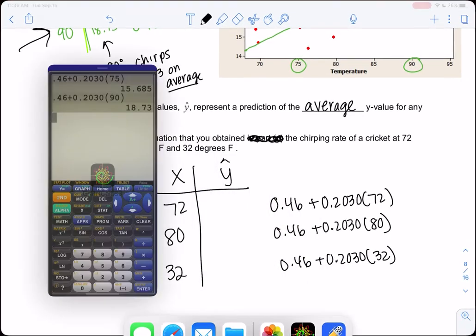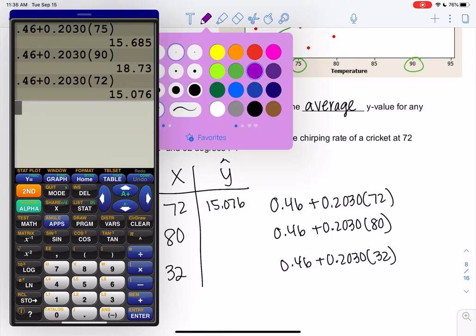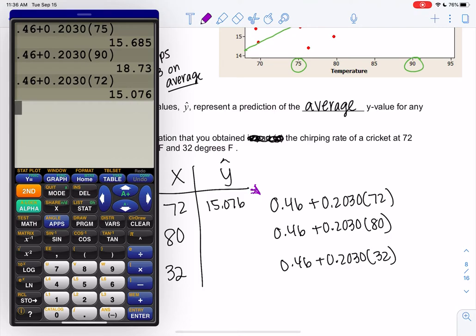You can just hit second enter and just change those temperatures. So 72 gives me 15.076. Back to that 'on average' conversation—so this is saying at 72 degrees Fahrenheit, the chirps per second is 15.076 on average. Every cricket will vary a little, but on average we should get around 15.076.